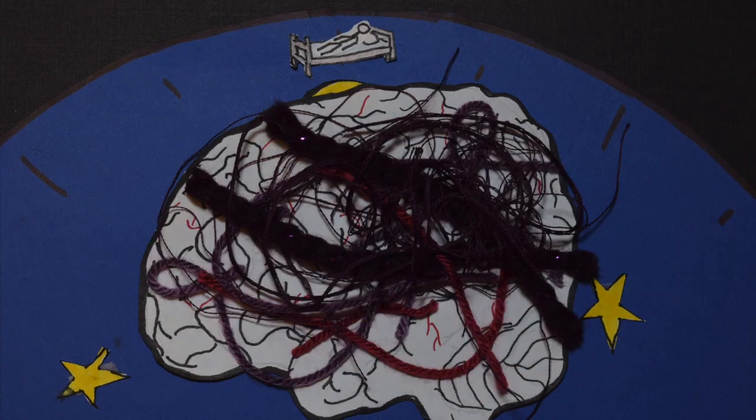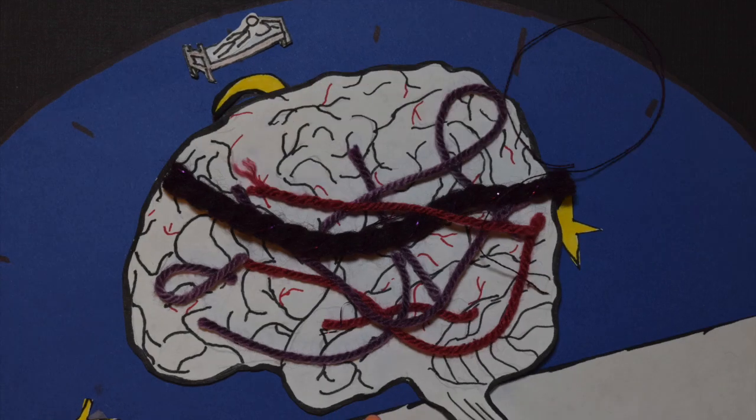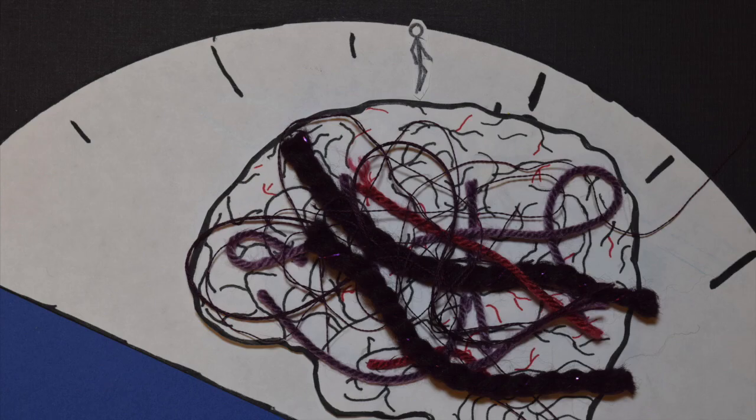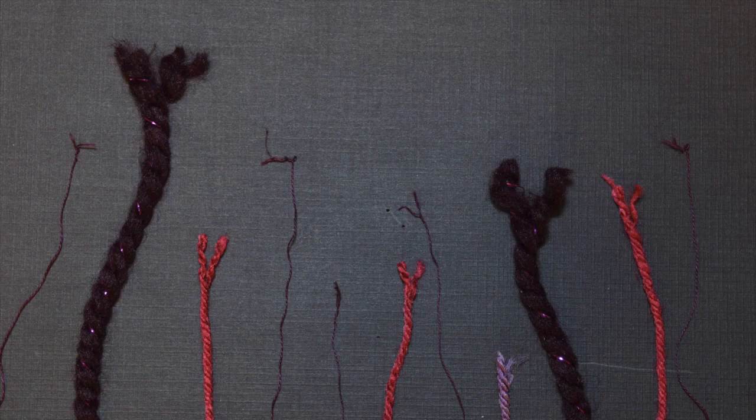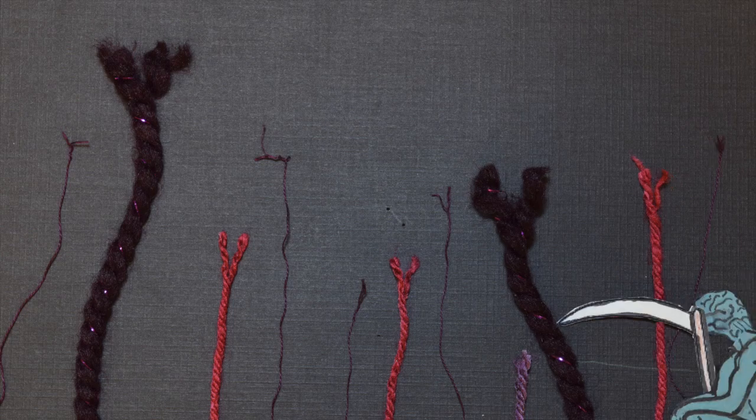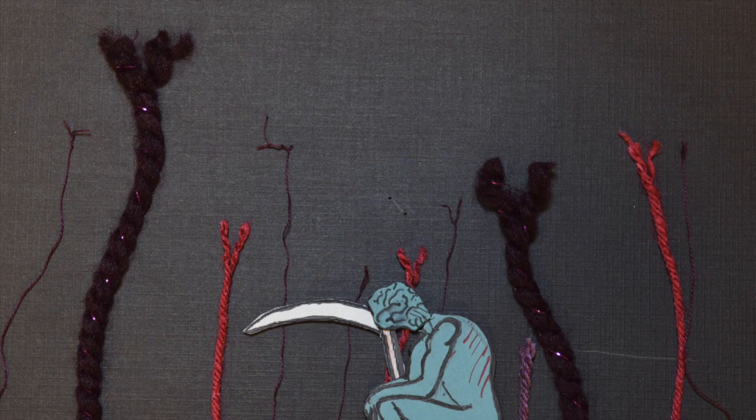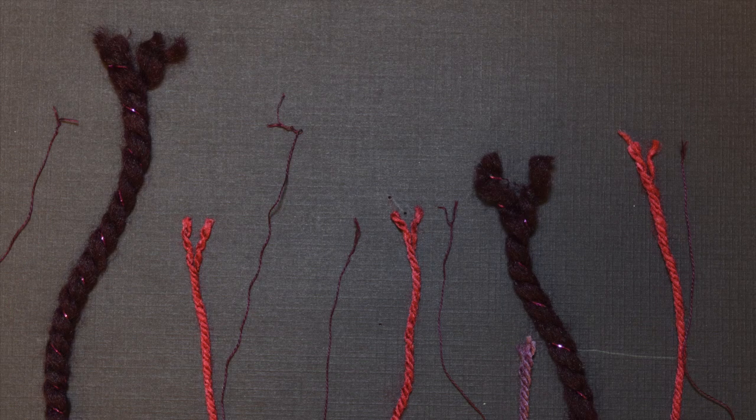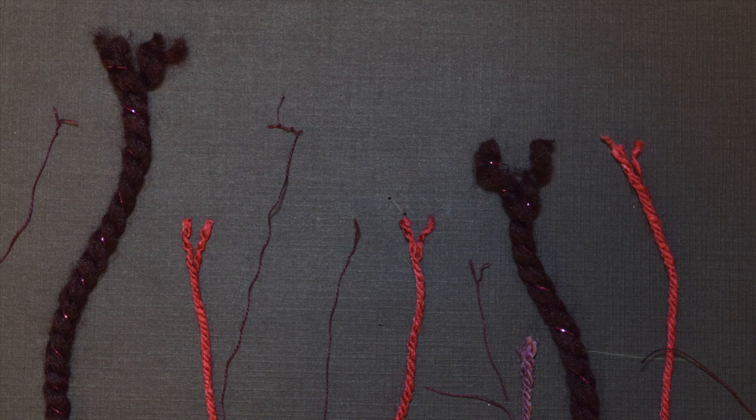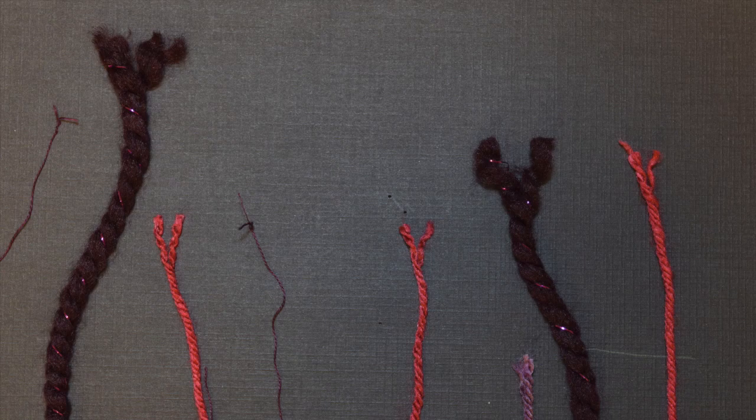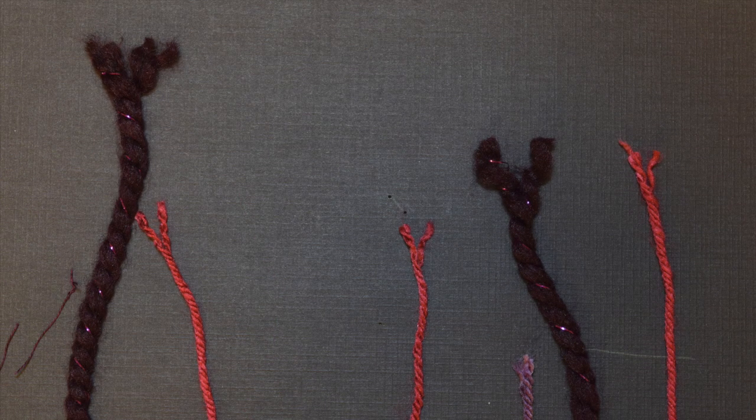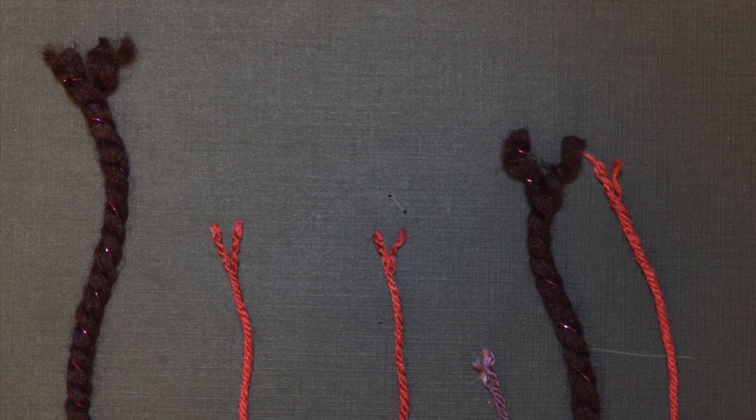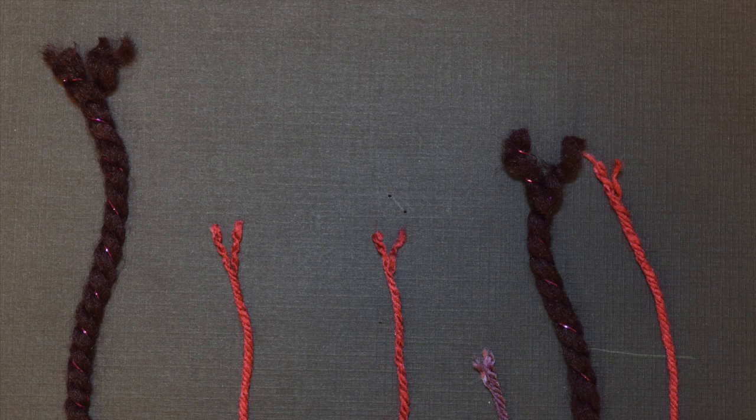The most important information is preserved, while the fluff is cleared away. This nightly separation of the synaptic wheat from the synaptic chaff is the reason you can remember what you had for breakfast today, a relatively unimportant memory, but not what you had for breakfast last Tuesday. And it ensures the brain is only devoting cellular supplies and storage space to important information.